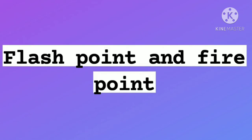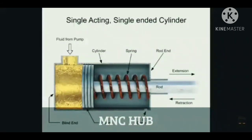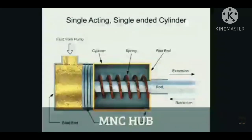The third important property is flash point and fire point. Flash point means if we increase the temperature of a flammable liquid up to the vapor state and then apply a flame, the liquid momentarily flames — this is called the flash point. If we increase the temperature beyond the flash point and apply a flame, the liquid flames continuously — this is called the fire point. The difference between both is that at the flash point the liquid flames momentarily, while at the fire point the liquid flames continuously.